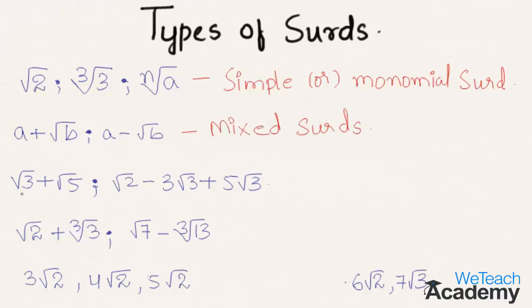Coming to the third example, where we have root 3 plus root 5. So a surd which is the sum or difference of two or more surds are called compound surds.